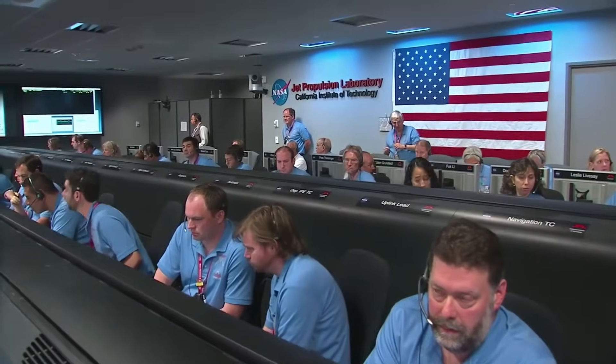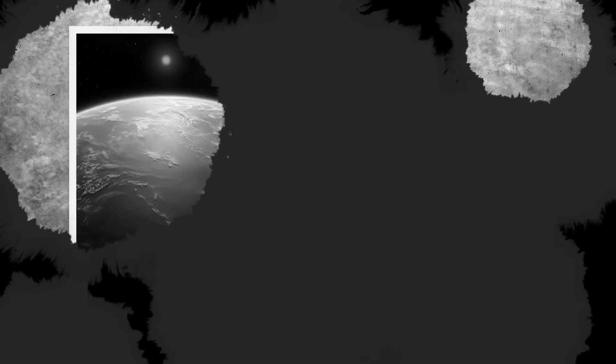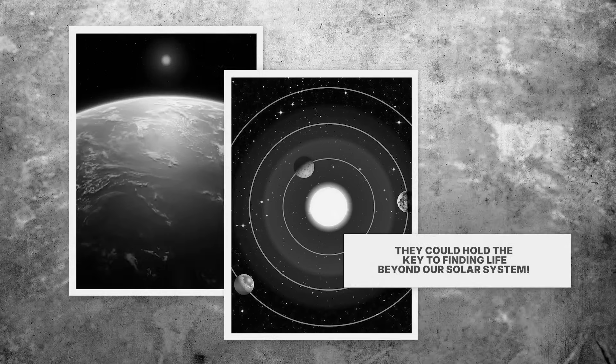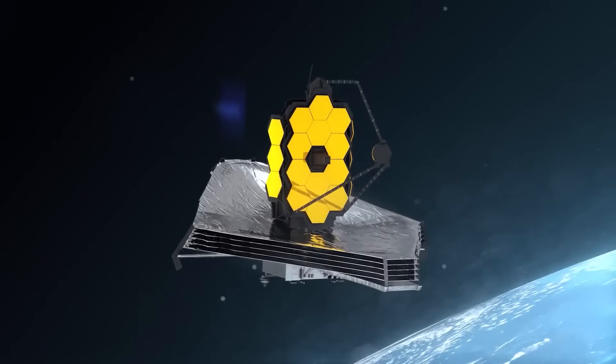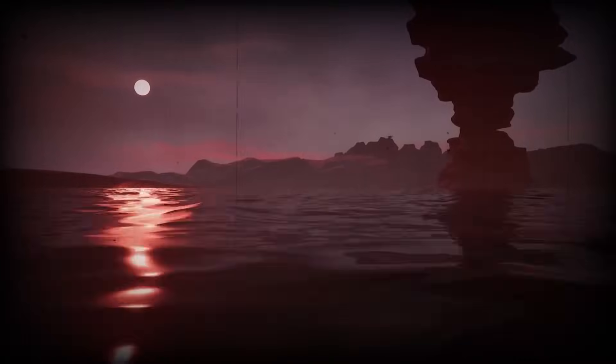NASA just uncovered a groundbreaking discovery. Multiple Earth-like planets are closer than we ever imagined, and they could hold the key to finding life beyond our solar system. With advanced telescopes revealing these potential second Earths, the hunt for habitable worlds is heating up.